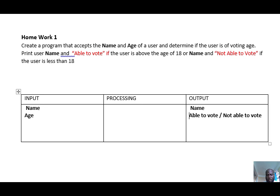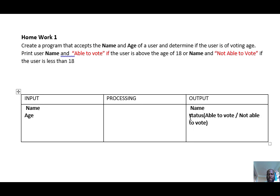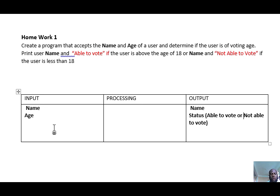Let's put that into the table. For output we have name, because we want to print out the name of the user. We also want to print out either 'able to vote' or 'not able to vote,' so we can label that as status. So our inputs are name and age, and our outputs are name and status — basically whether the user is able to vote or not.